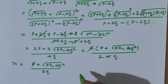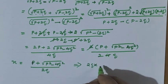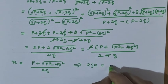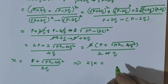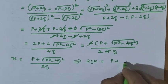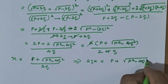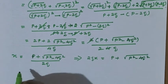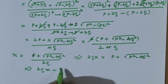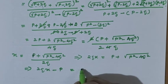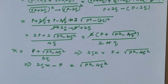Now cross multiply: 2qx equals p plus root of p squared minus 4q squared. We have not done this type of question before. Bringing p to this side: 2qx minus p equals root of p squared minus 4q squared.